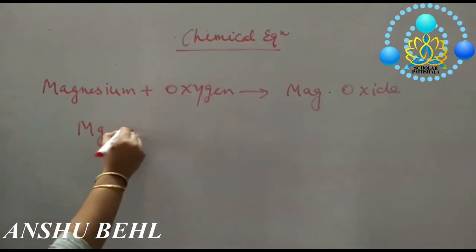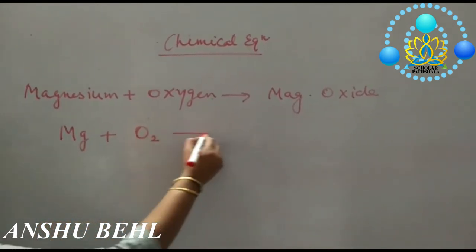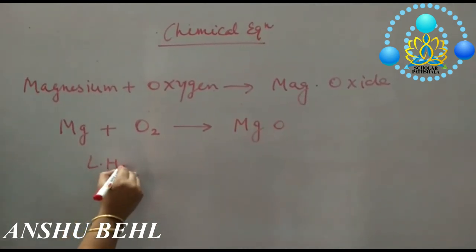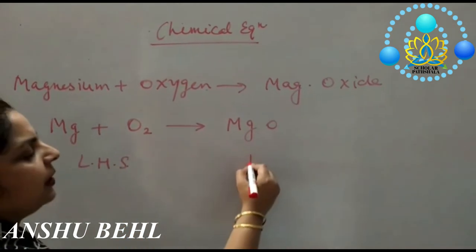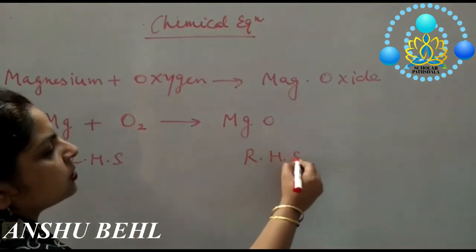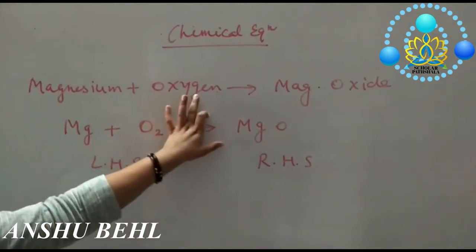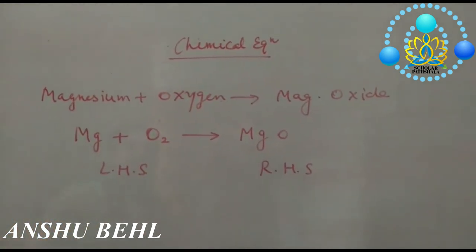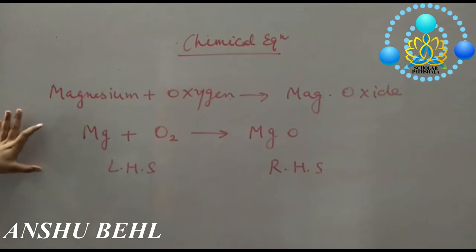Magnesium burns in presence of oxygen to form magnesium oxide. Left-hand side is depicting reactants and right-hand side is depicting products. This arrowhead shows separation between reactants and products. This is called chemical equation.